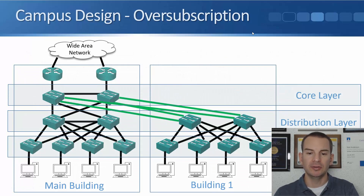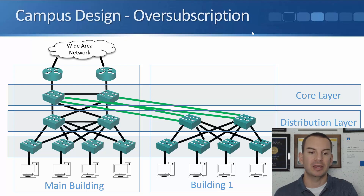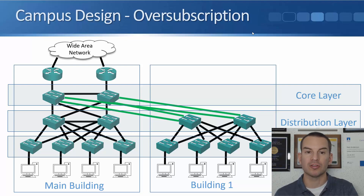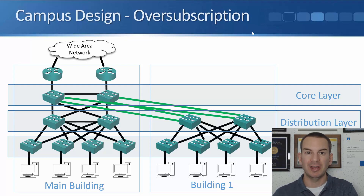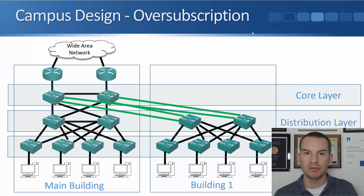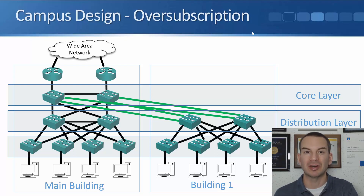Going back a slide, we've got two buildings with four access layer switches in each building. They're 48-port switches with 40 end hosts plugged into each switch, so that's 160 hosts in each building. They're uplinking to a pair of distribution switches in both buildings. I've got 160 devices in both buildings, but I don't have 160 uplinks going from the access layer to the distribution layer.